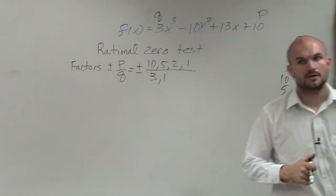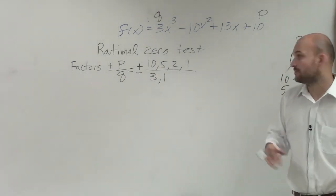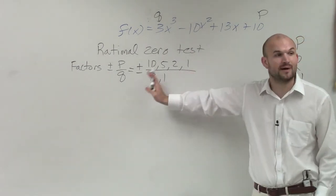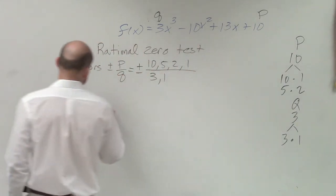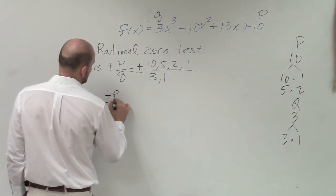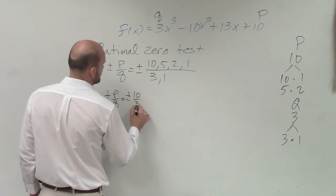So now to determine all of the possible rational zeros, we need to do plus or minus all of the possible rational zeros I can create from these set of factors. So therefore, plus or minus p over q for the factors equals plus or minus 10 over 3,